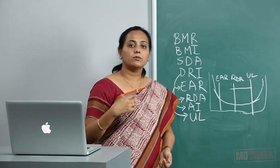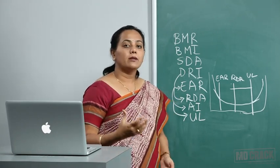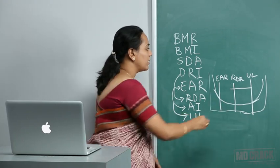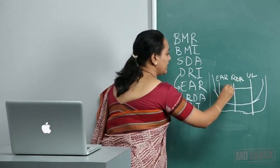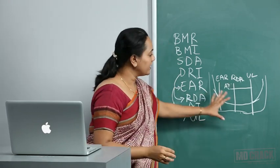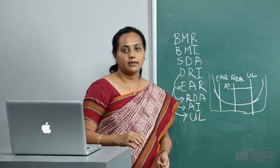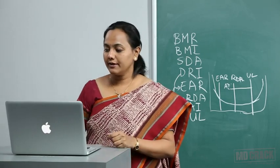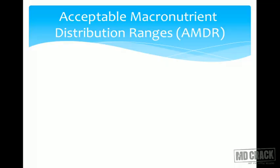From an MCQ standpoint: RDA meets 98% of population needs; Adequate Intake (AI) is not derived from EAR or RDA. The next important term is Acceptable Macronutrient Distribution Ranges — AMDR.